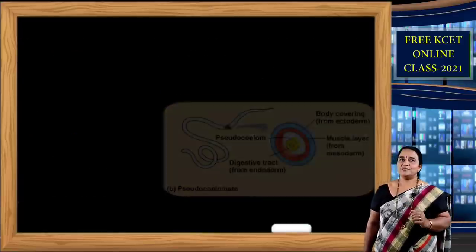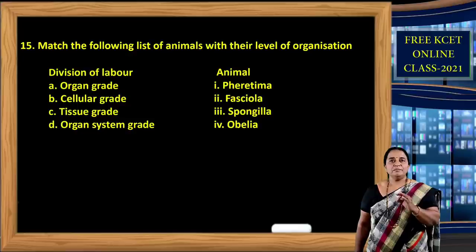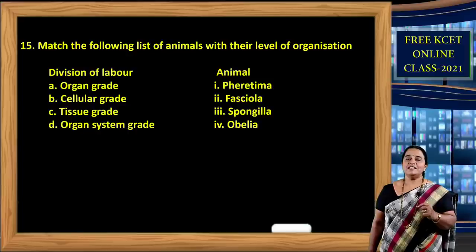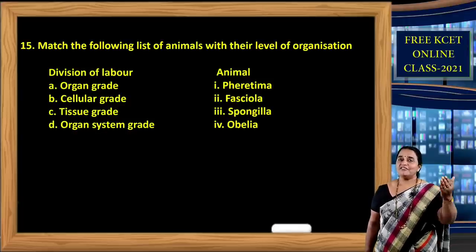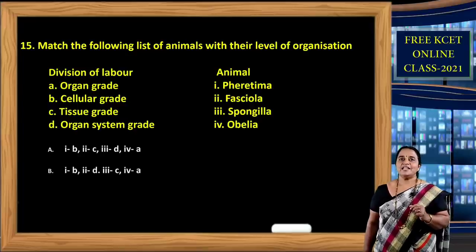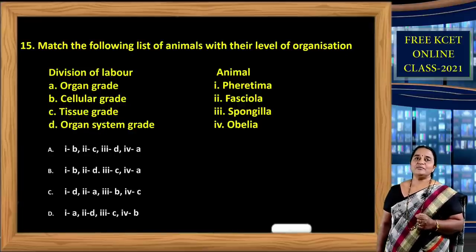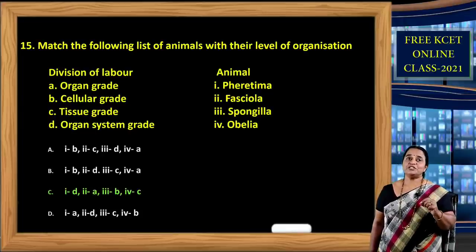Question 15: Match the columns — Column 1 shows levels of organization; Column 2 shows animals. Ferritima (earthworm) belongs to annelida — organ system grade. Fasciola (liver fluke) is a flatworm — organ grade. Spongilla is a poriferan in fresh water — cellular grade. Obelia is a coelenterate — tissue grade. Matching both columns, the correct option is C.